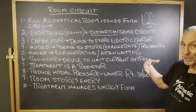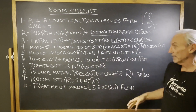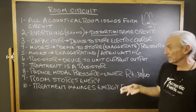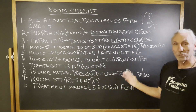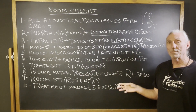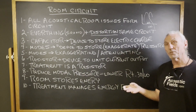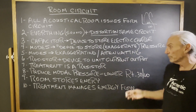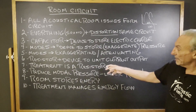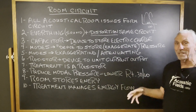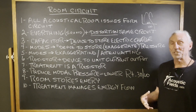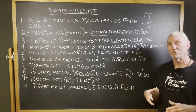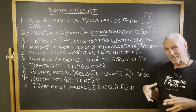A resistor is a device that limits current flow through a circuit. So what's the treatment? Well, treatment's a resistor — that's what we're trying to do. For low frequency pressure management, we're using diaphragmatic absorption with our carbon technology. For reflections, we're using our foam technology. And of course, diffusion is always an option with reflections also. But the bottom line is the treatment is acting as a resistor. We're trying to limit the amount of energy in the room, trying to restrict certain pressure levels at certain frequencies — so we're trying to resist it.